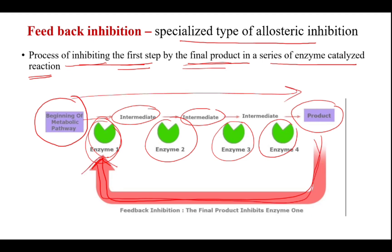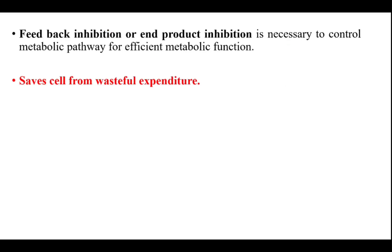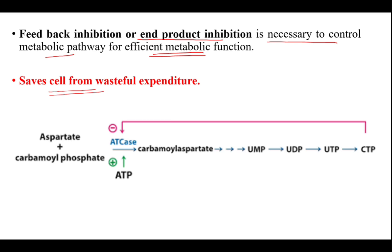Feedback inhibition, or end-product inhibition, is necessary to control the metabolic pathway for efficient metabolic function. This type of inhibition saves the cell from wasteful expenditure. For example, aspartate plus carbamyl phosphate: CTP (cytidine triphosphate) is the final product, and this product inhibits the enzyme aspartate transcarbamylase by feedback inhibition, so that further formation of CTP is stopped.